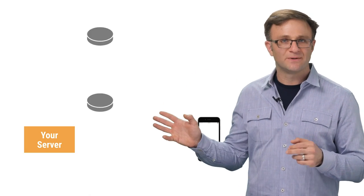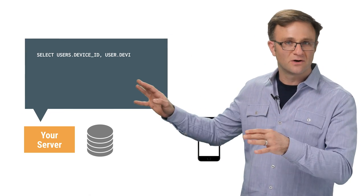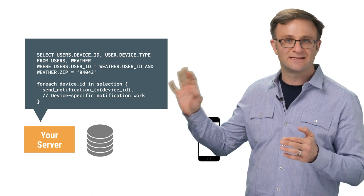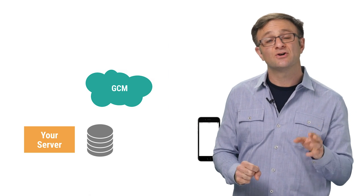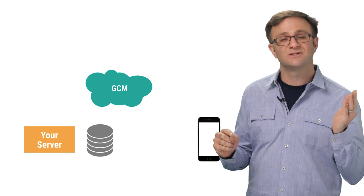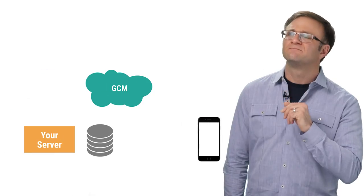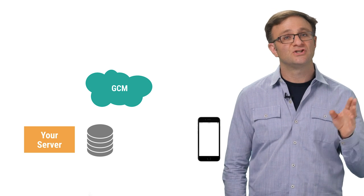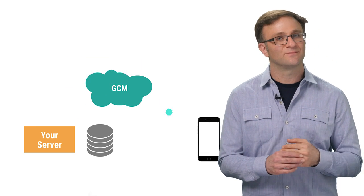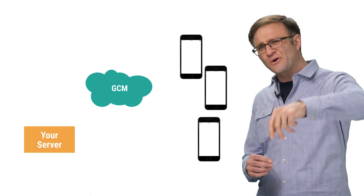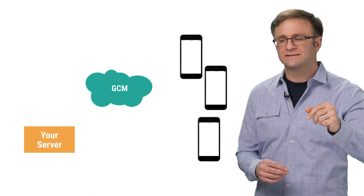In the old way of doing this, you'd probably need to set up a database where you keep track of each one of your users, their devices, and their zip codes, and do this whole 'select users where blah blah blah' query, then loop through the results and send notifications to each device. But with topics, none of that's necessary. Instead, your app simply tells GCM that you're interested in subscribing to, say, the weather-94043 topic. Then, next time there's rain in California — for us, that counts as extreme weather — your server simply tells GCM to send notifications to all devices subscribed to the weather-94043 topic, and I will get notified along with all other devices subscribed to that topic. So there's no database required.